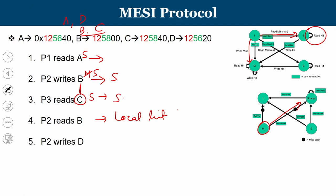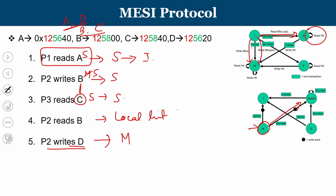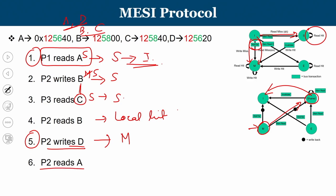P2 writes D: since A and D are in the same block, and P1 is holding A in the Shared state, P2 issues a write miss (I-to-M transition with RWITM on the bus). P1's copy of A/D transitions from Shared to Invalid. P2 then reads A: P2 already has the block in Modified state (from the write to D), so this is a local hit — no change at all.